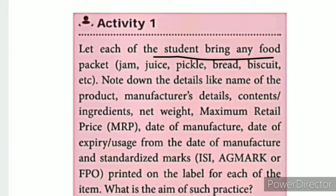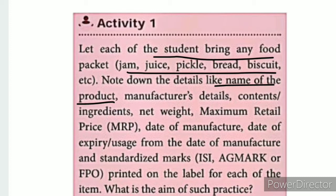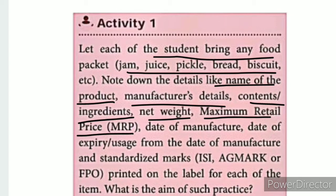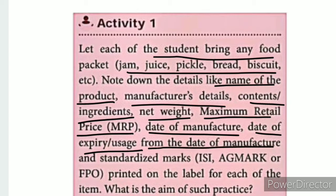Note down the details on a product label, like the name of the product, manufacturing details including the address, content and ingredients, weight, and Maximum Retail Price (MRP). Also check the date of manufacture and date of expiry or usage, as well as the standardized mark.